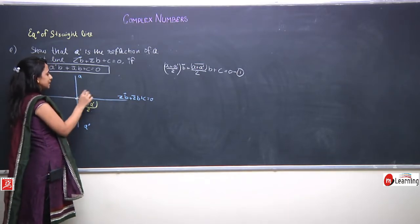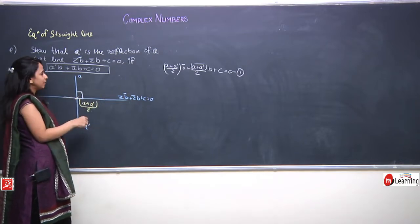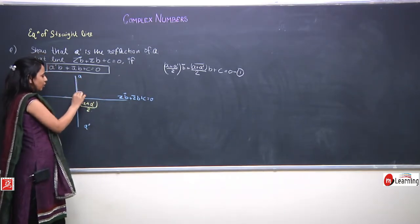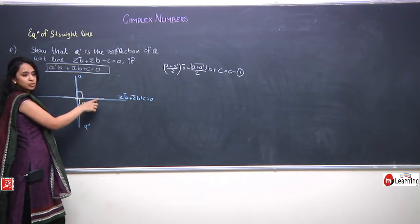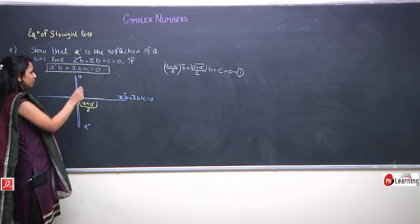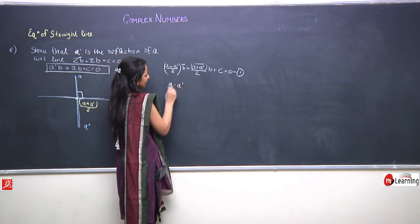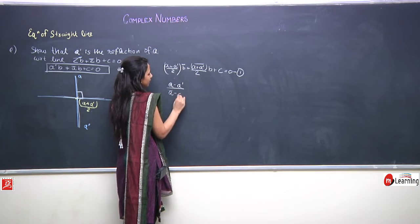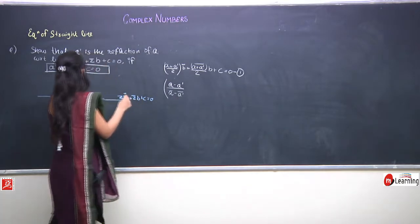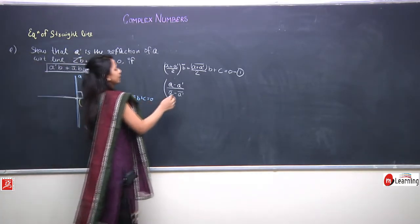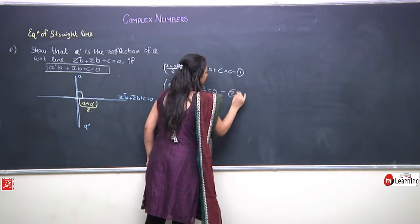The next condition is that since this is the perpendicular bisector, the line AA′ must be perpendicular to b̄·z + b·z̄ + c = 0. Therefore, the sum of their complex slopes must equal zero: the complex slope of AA′ is (a - a′)/(ā - ā′), and the complex slope of the given line is -b/b̄. So: (a - a′)/(ā - ā′) + (-b/b̄) = 0. This is equation (2).